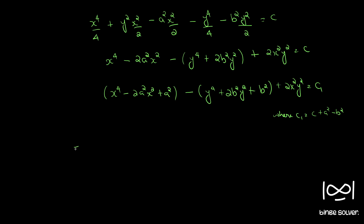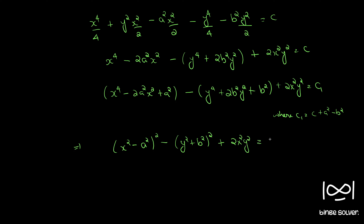So we can simplify: (x² − a²)² − (y² + b²)² + 2x²y² = c1. This is the solution given.